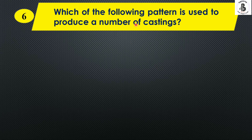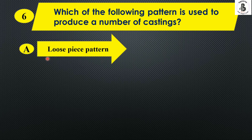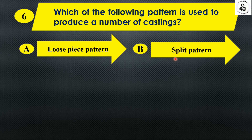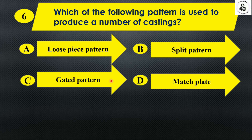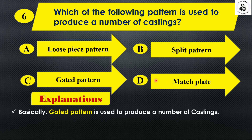Which of the following patterns is used to produce a number of castings? Option A loose piece pattern, option B split pattern, option C gated pattern, and option D match pattern. Basically, the gated pattern is used to produce a number of castings. So the answer is option C.